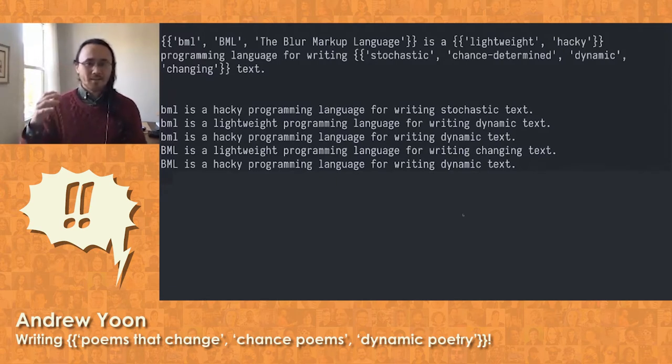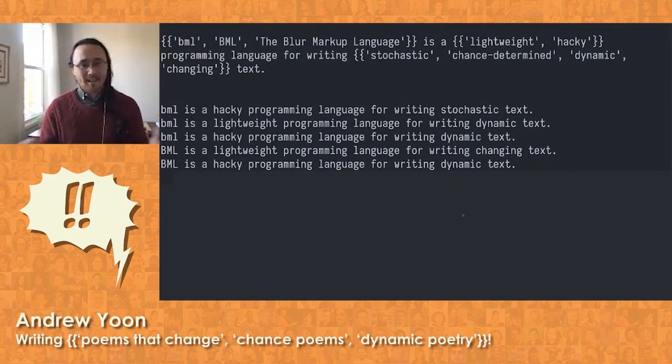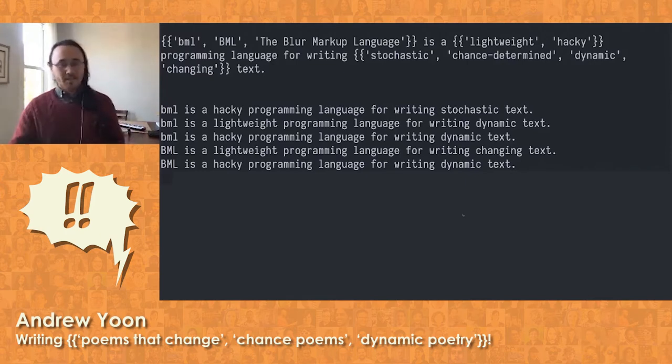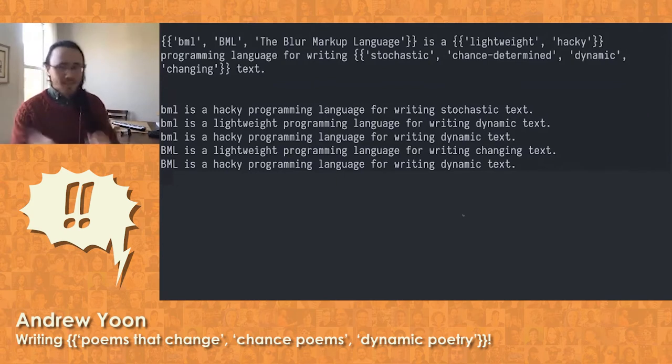So here we have a basic summary of what the language is, and a bunch of different ways to write it out. Like we can spell BML lowercase as I prefer, or uppercase, or you can fully spell out the acronym. And then we can describe it as maybe it's lightweight or hacky, all these different things that can happen. And you can see five different ways that it's been realized below. And hopefully you can see that all of the details change, and the number of permutations that could occur here is really quite large.